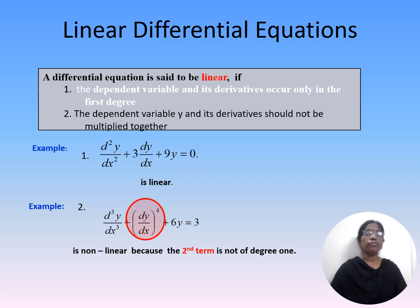For example, consider the differential equation d²y/dx² + 3·dy/dx + 9y = 0. This is a linear differential equation because it satisfies both conditions. Now consider d³y/dx³ + (dy/dx)⁴ + 6y = 3, which is a nonlinear differential equation because the second term (dy/dx)⁴ is not of degree 1.